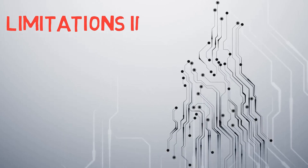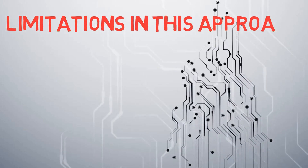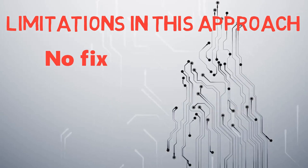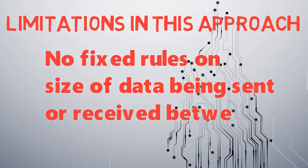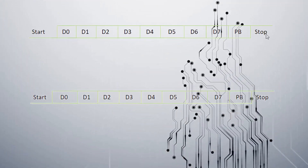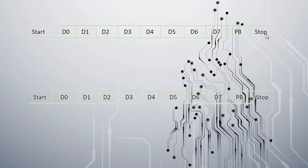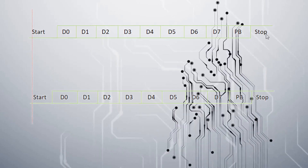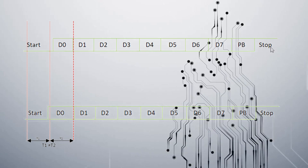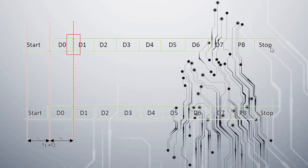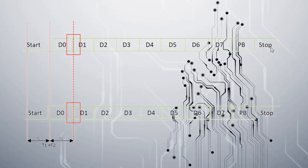This approach has one more limitation — no fixed rules on the size of data being sent or received between MCU A and MCU B. Here we will see how communication is initiated and the difference in lines between two different data transmissions. We can see the start time is indicated from data 0 and it continues to the other data as well.